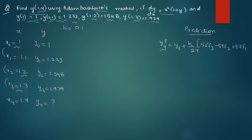This is in the formula: 56f3 minus 59f2 plus 37f1 minus 9f0. This is your y prediction.